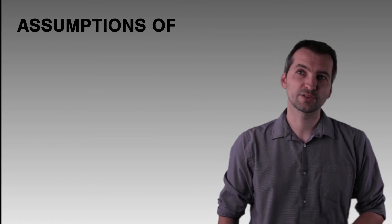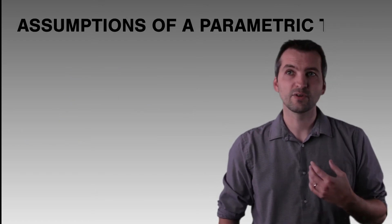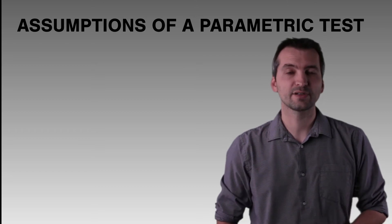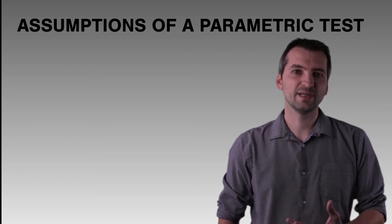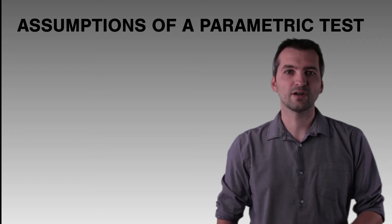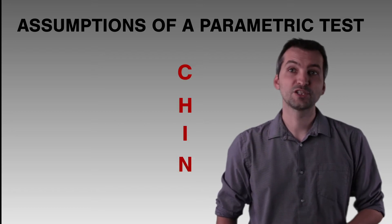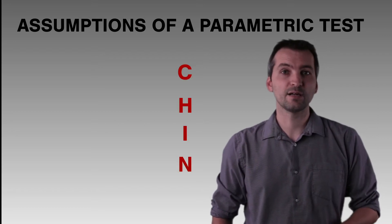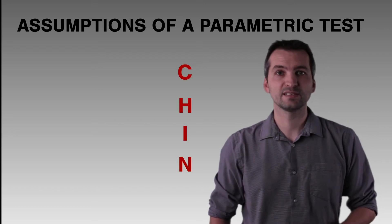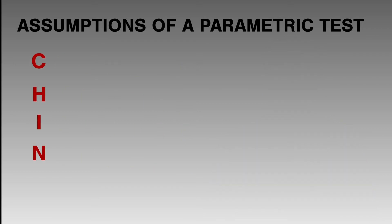When thinking about the assumptions of parametric tests, we can use the acronym CHIN to help remember them. The first assumption is Continuous — this means the dependent variable must produce interval or ratio data only.